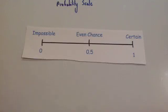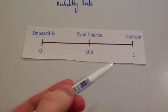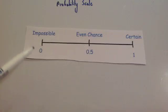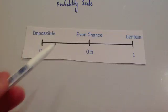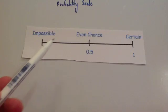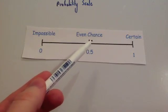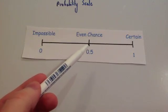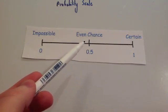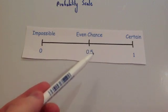In this video we're going to look at the probability scale. The probability scale goes from 0 to 1. Zero is impossible, so something that's got no chance of happening at all. Something that has got an even chance, like flipping a coin and getting a head, would be 0.5.